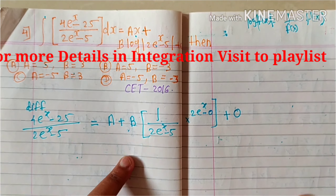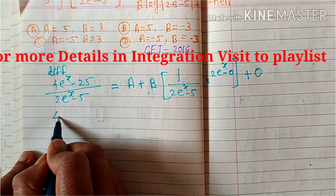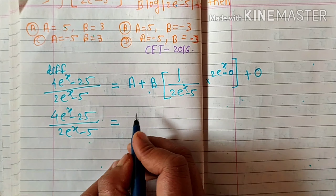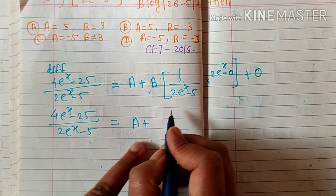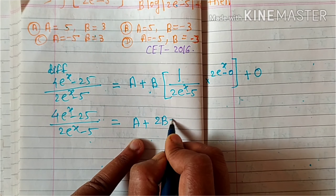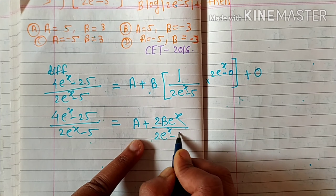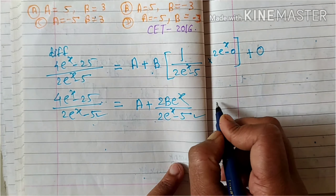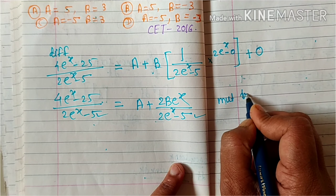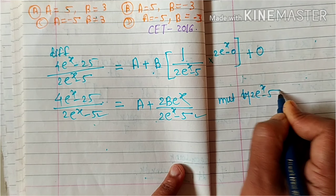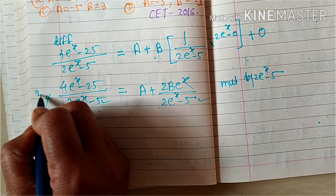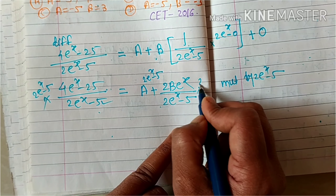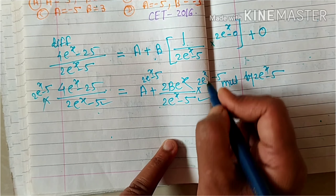The derivative of the constant 5 is 0, and the derivative of constant c is also 0. Then we simplify: 4e^x minus 25 divided by (2e^x minus 5) is equal to a plus b into 2e^x divided by (2e^x minus 5). To cancel the denominator, we multiply the whole equation by (2e^x minus 5).